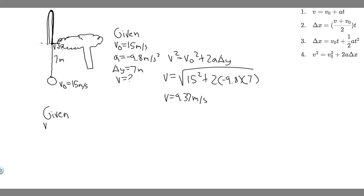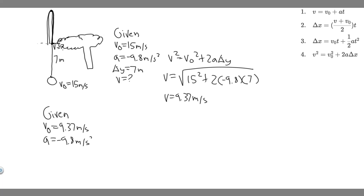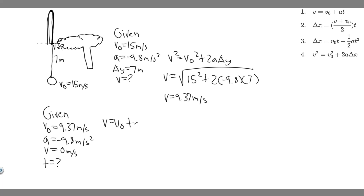For this interval, we know the initial velocity is 9.37 meters per second. Acceleration is still minus 9.8. And when something reaches its top, its velocity is zero — so the final velocity is 0 meters per second. We have v₀, a, and v, so we use v equals v₀ plus a times t.